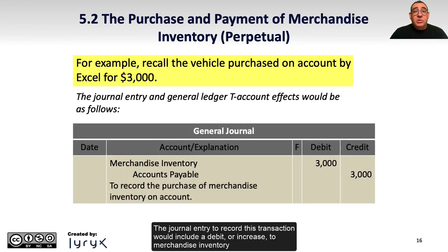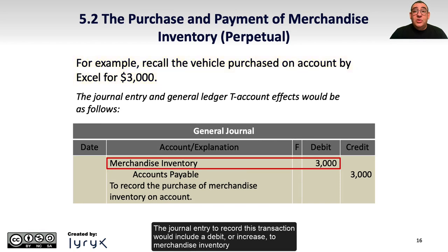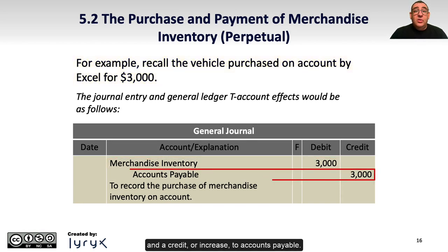The journal entry to record this transaction would include a debit or increase to merchandise inventory, and a credit or increase to accounts payable.